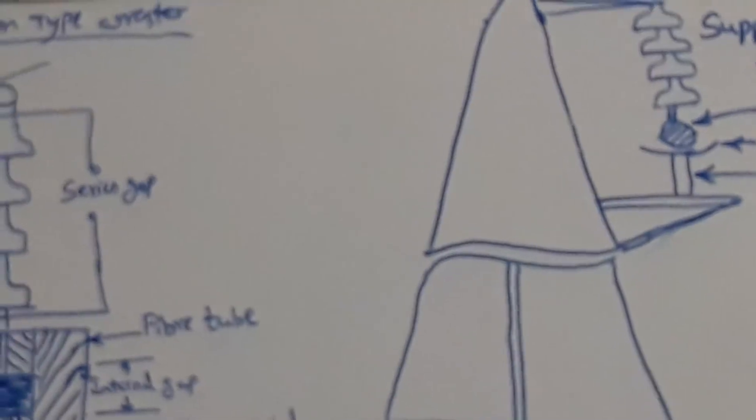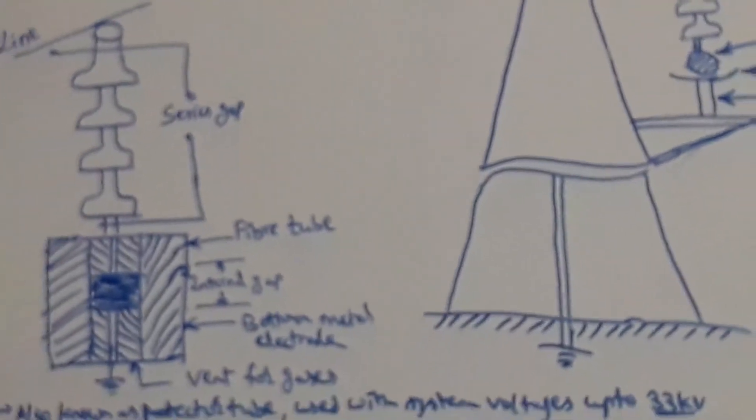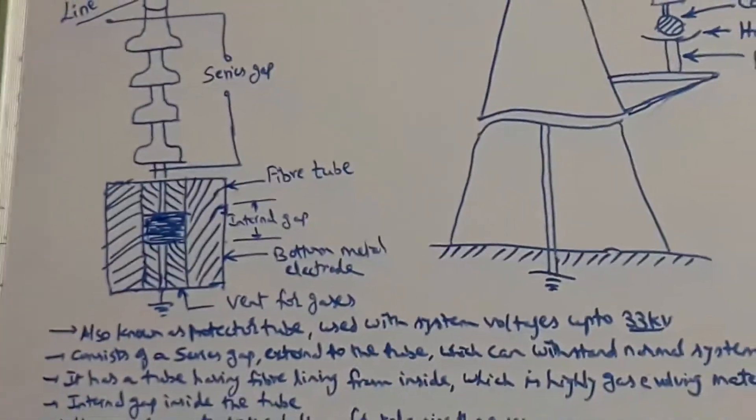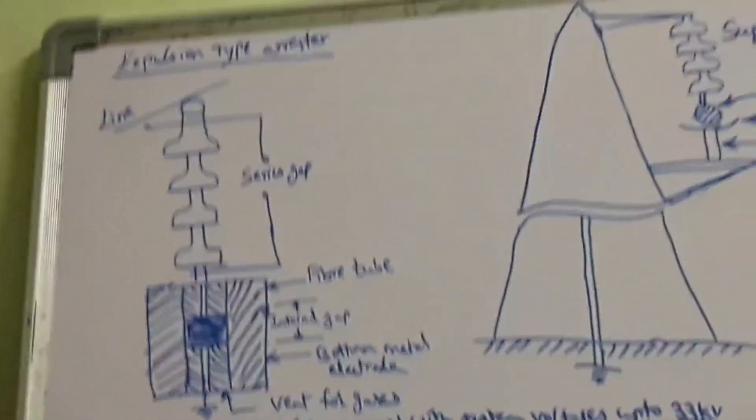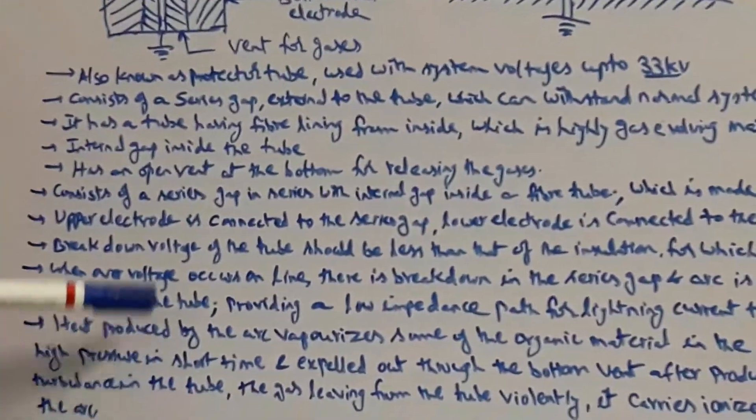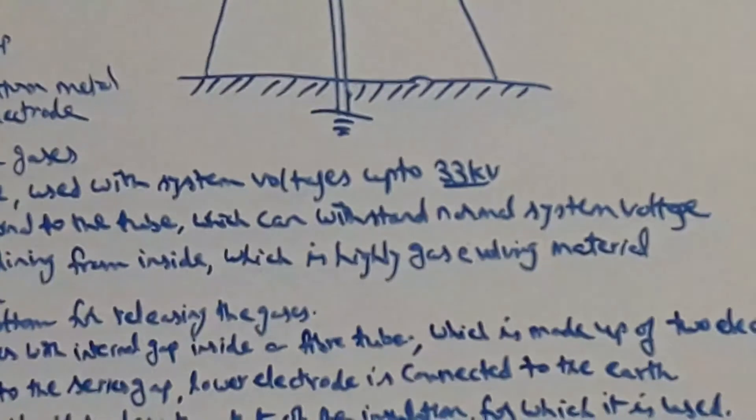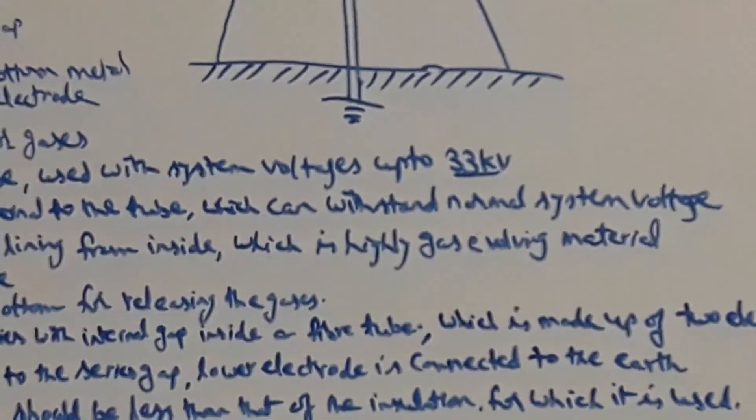This is how we extinguish the arc produced by overvoltages, thus rendering protection against overvoltages in the protected line. This type of arrestor can be used for system voltages up to 33 kV in the protected line.